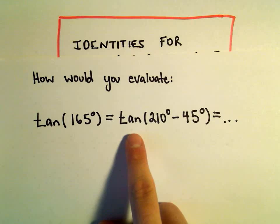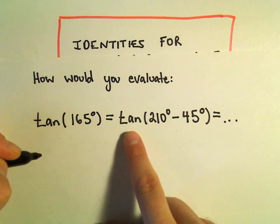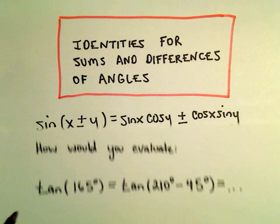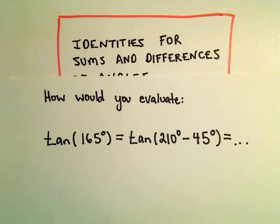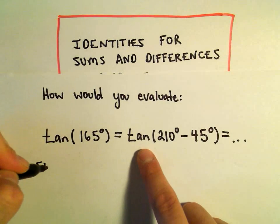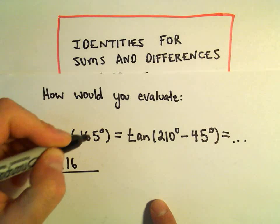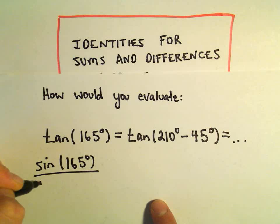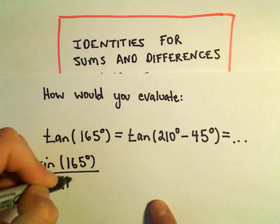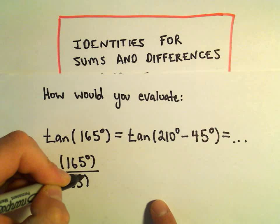Okay, we didn't give an identity for tangent in terms of these sums and differences yet, but recall we can write tangent as sine over cosine. So we would have sine of 165 degrees over cosine of 165 degrees.